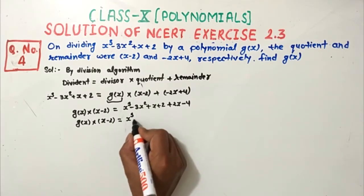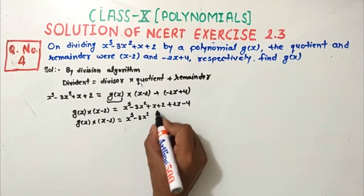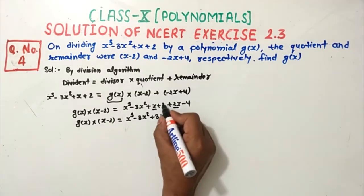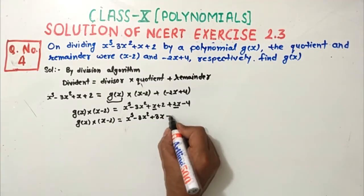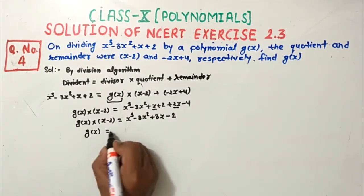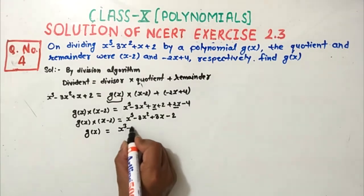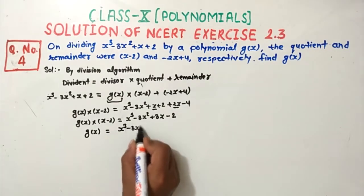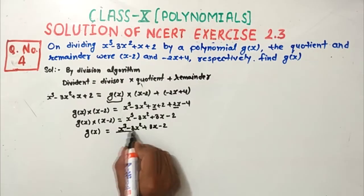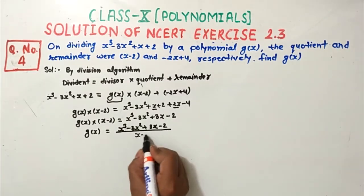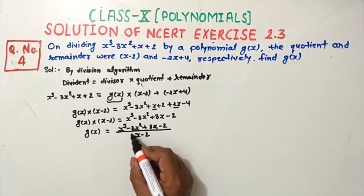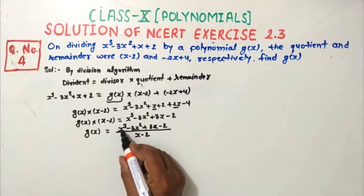Simplifying: x³ and then minus 3x², and x plus 2x gives us 3x, and 2 minus 4 gives minus 2. So g(x) equals x³ minus 3x² plus 3x minus 2, divided by x minus 2.